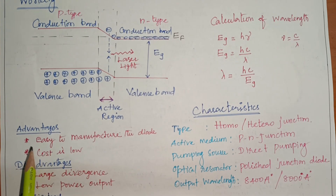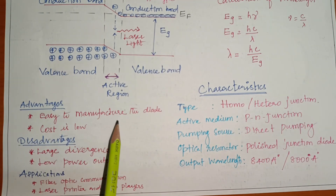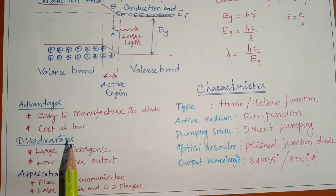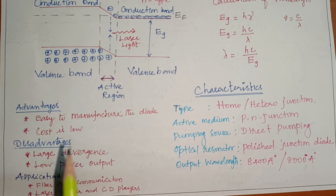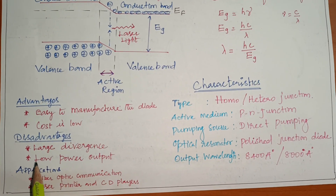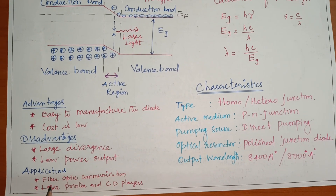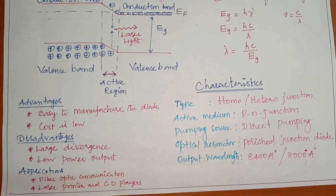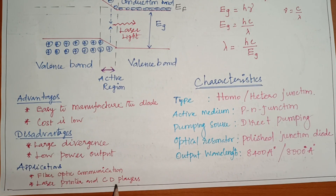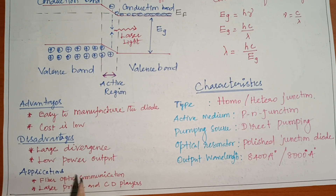The advantages are: easy manufacturing of the diode and very low cost. The disadvantages are: large divergence and low power output. Applications include fiber optic communication systems, laser printers, CD writers, and DVD writers.